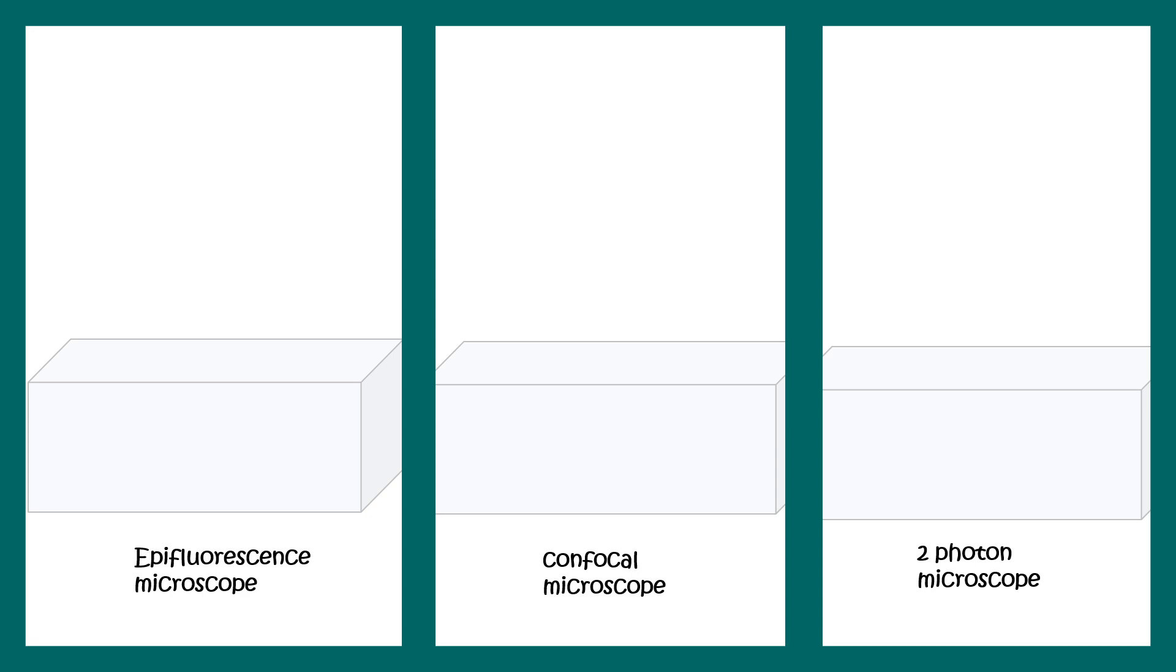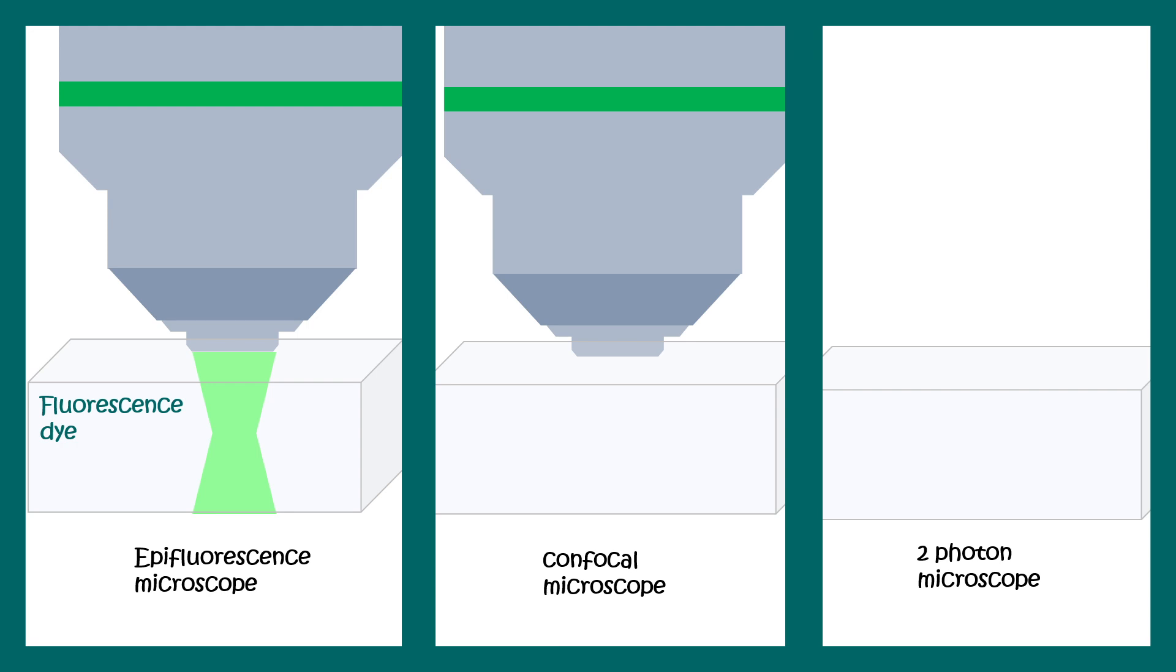Let us compare epifluorescence, confocal and two photon microscope together. In wide field illumination lots of fluorophores would be excited, maybe some in the plane of illumination and some not in the plane. The illumination is pretty broad. In confocal we can limit it down to a narrow waist and narrow volume. But still there's a chance that molecules present up and down the plane would be excited. In two photon microscopy this illumination is restricted to a very narrow point.